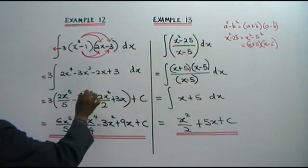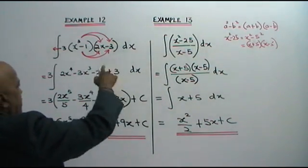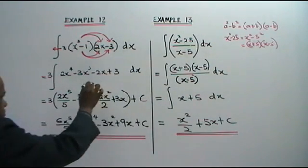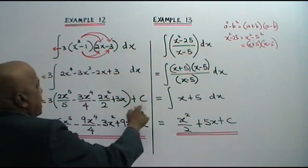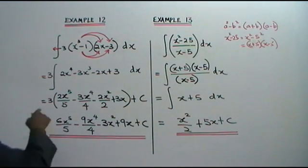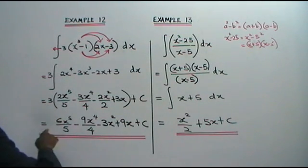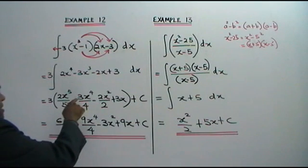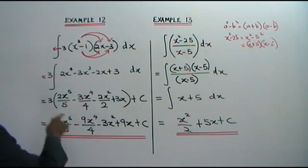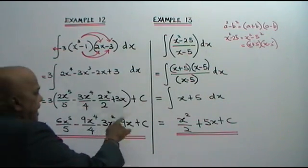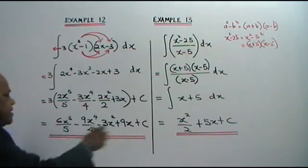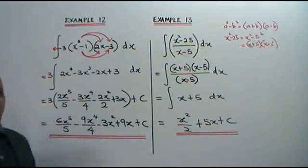3 plus 1 is 4, bring the 4 down. 1 plus 1 — no power means power 1 — 1 plus 1 is 2, bring the 2 down. Plus 3x — just a number, add the x. Plus C. Now we multiply each of these by 3: 3 times 2 is 6; 3 times negative 3 is negative 9; 3 times 2 is 6 but cancel the 2, so you get 3. Result: 6x⁵ over 5 minus 9x⁴ over 4 plus 3x squared plus 9x plus C. This is your answer.